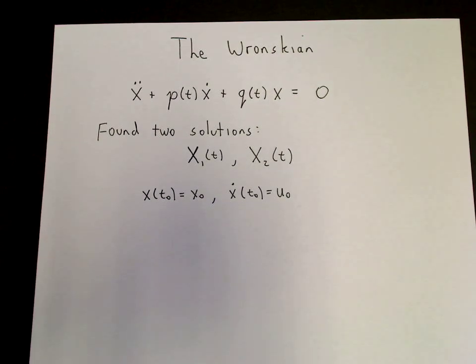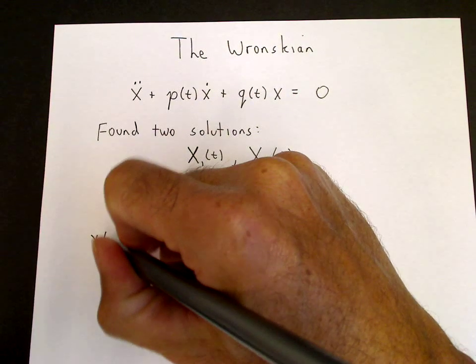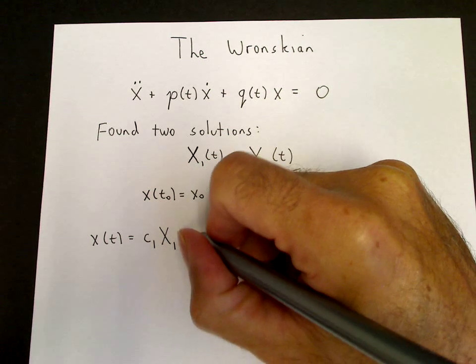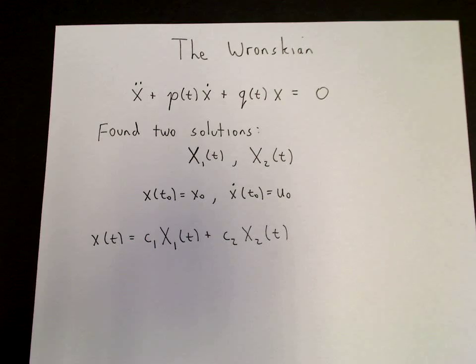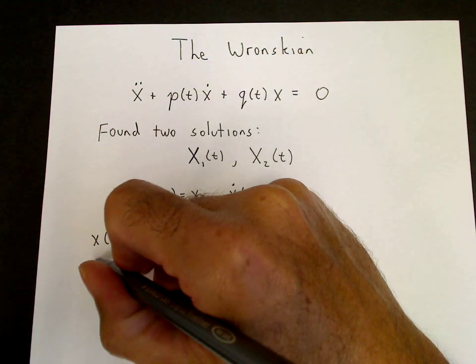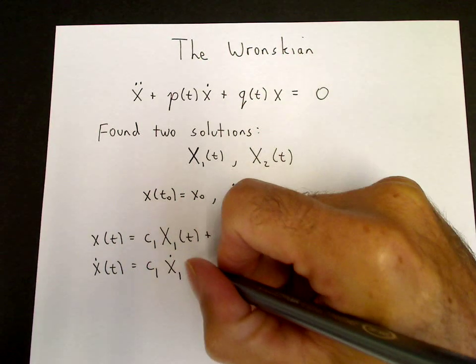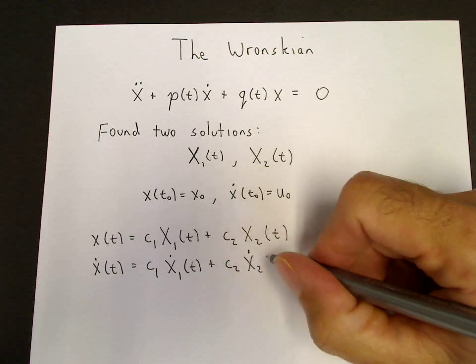So using the principle of superposition, we can use x1 and x2 to write down a general solution. We write x of t equals some constant times x1 of t plus some other constant times x2 of t. And those initial conditions are supposed to be used to determine the free constants. For instance, to apply the initial condition on the derivative, it's useful to write down the derivative. So this is simple because it's a linear combination of functions. So we just take the derivatives of x1 and x2.